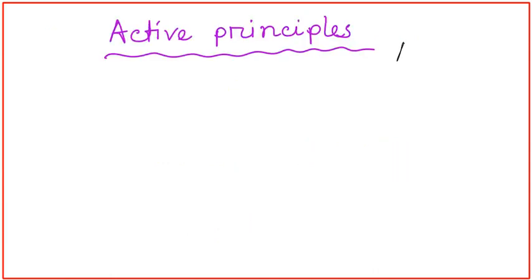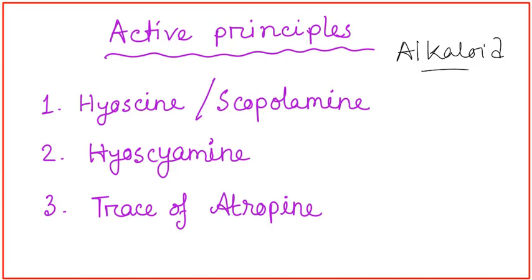The active principles of Dhatura are commonly alkaloids. The common alkaloids found in Dhatura are hyoscine or scopolamine, hyoscyamine, and trace amounts of atropine.